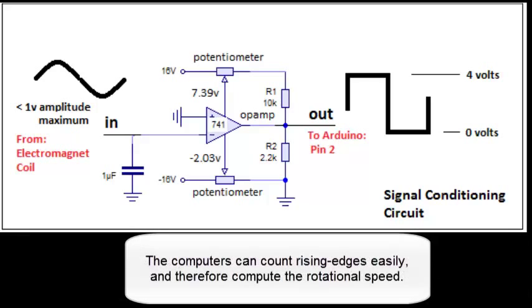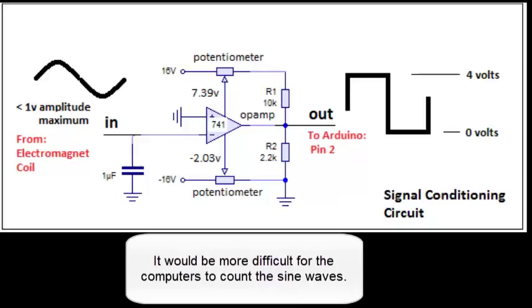The computers can count rising edges easily and therefore compute the rotational speed. It would be more difficult for the computers to count sine waves.